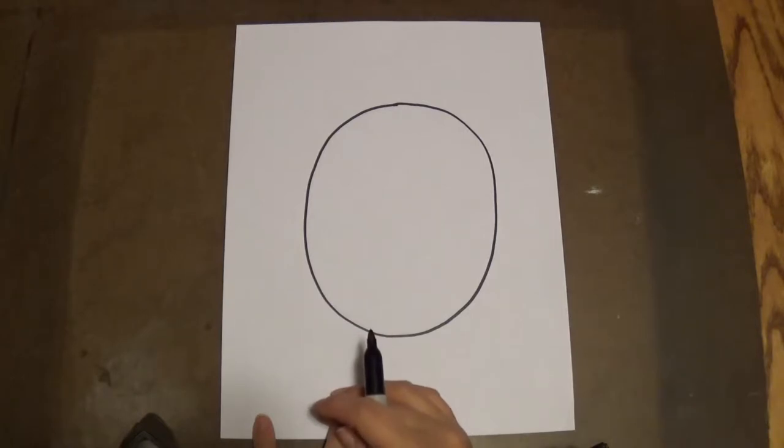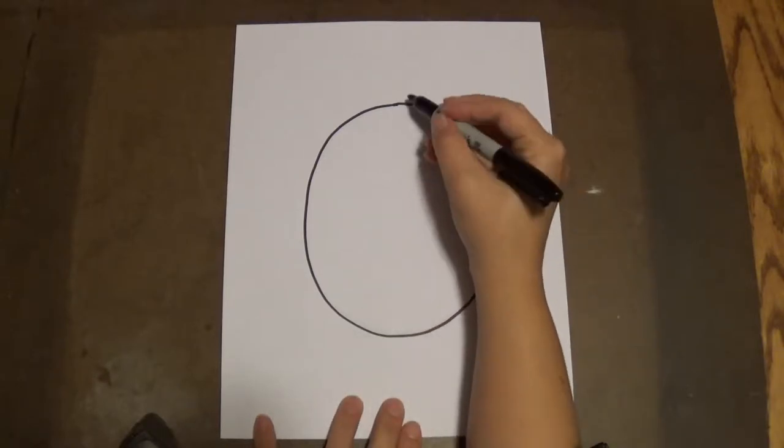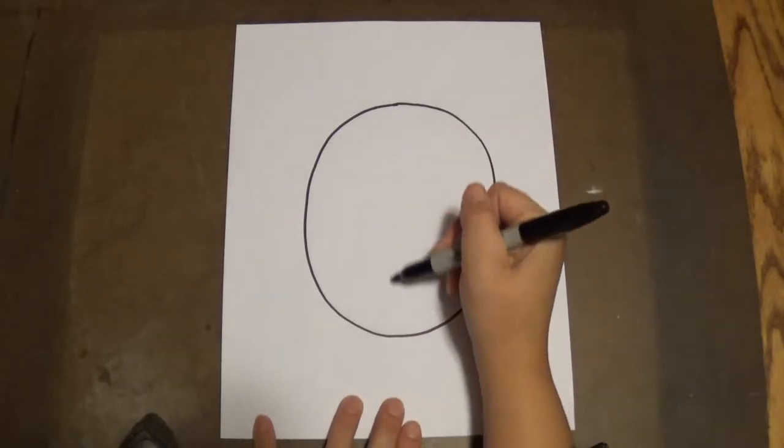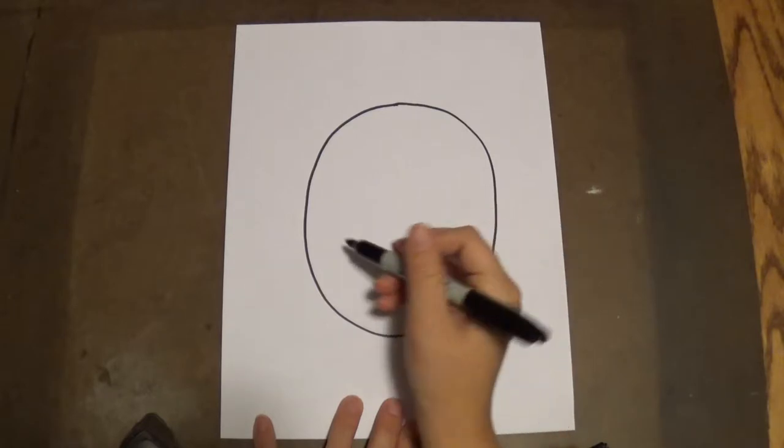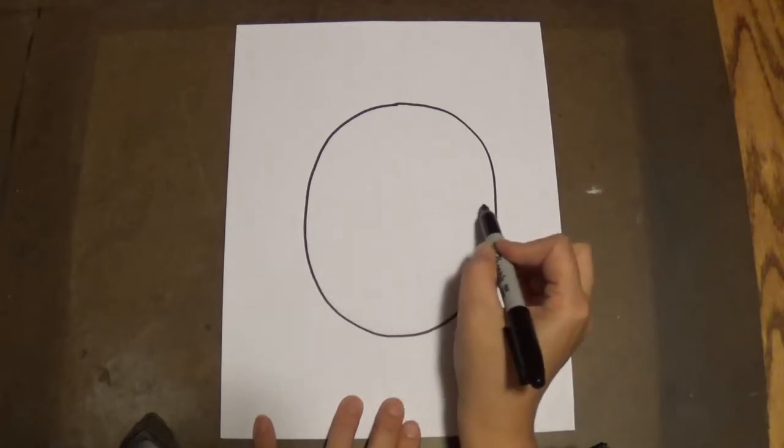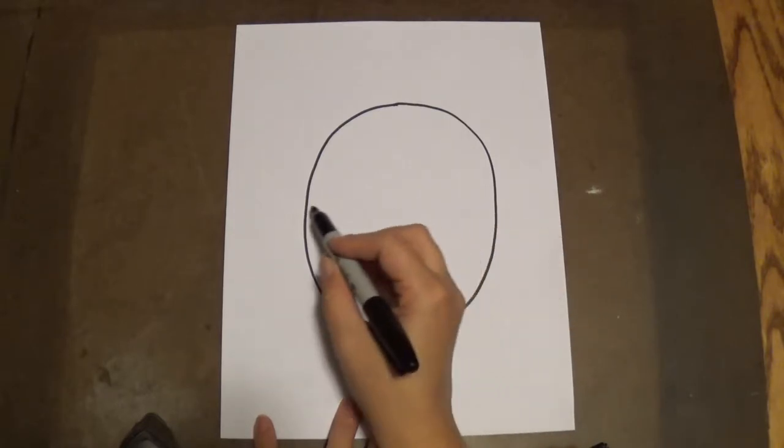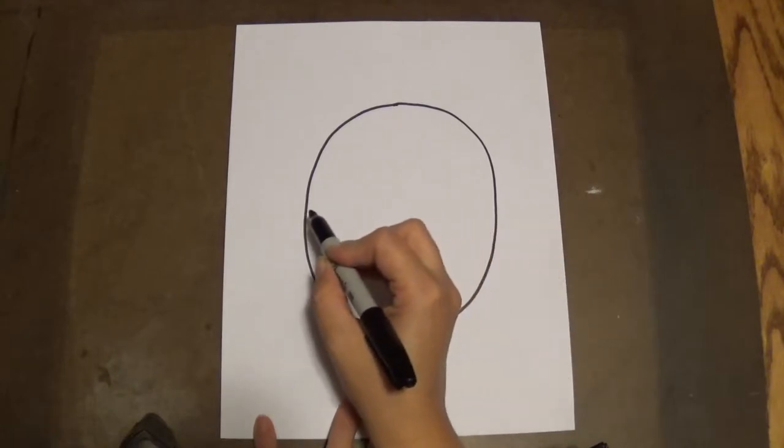Good job, friends. Then we're going to draw the eyes on our face. And did you know that our eyes are about halfway between the top and the bottom? So if you pretend there's a line going right through the middle of this, that's where your eyes are going to be.